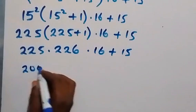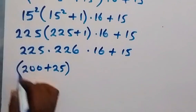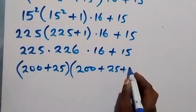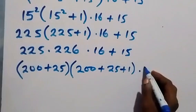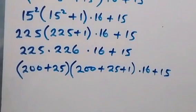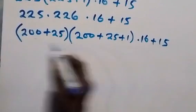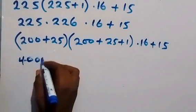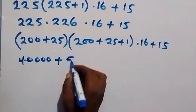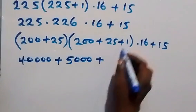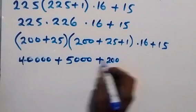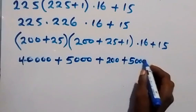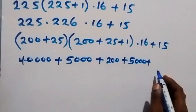In the next step, we can write 225 as 200 plus 25, times 226, which we write as 200 plus 25 plus 1. Then we use this bracket to multiply the second bracket: 200 times 200 is 40,000, plus other cross terms, and 25 times 1 is 25, giving us 625 as part of the expansion.